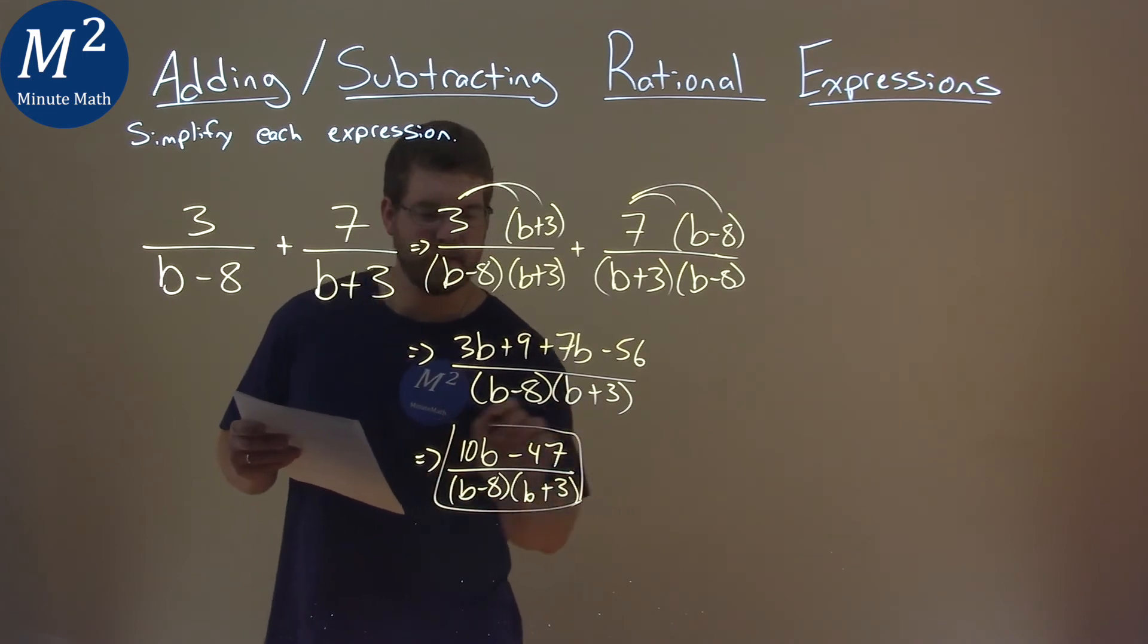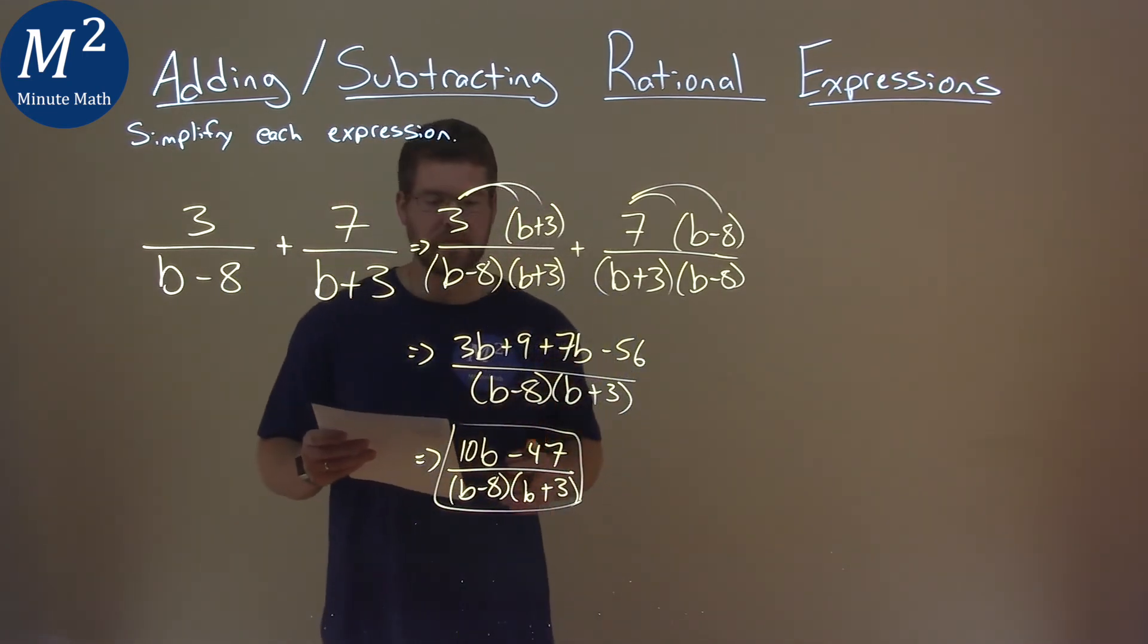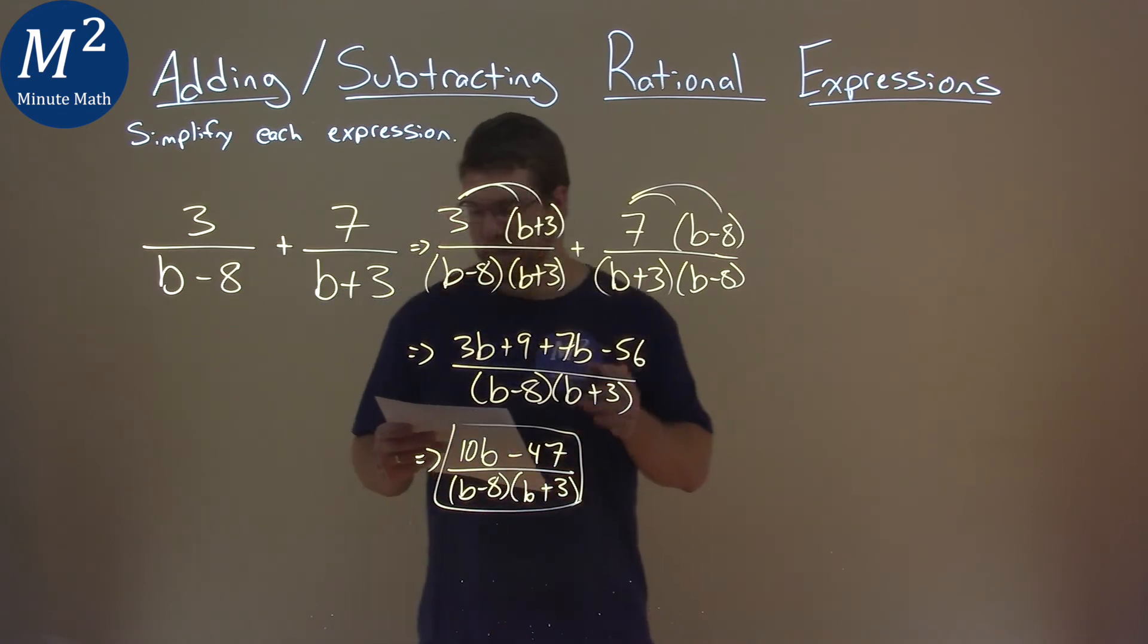And so, that's it. Our final answer here is 10b minus 47 over b minus 8 times b plus 3.